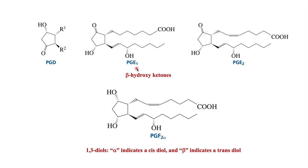PGD, PGE1, and PGE2 contain beta-hydroxy ketones. There is a ketone, and at the beta position they contain a hydroxyl group, making them beta-hydroxy ketones. The subscript 1 in PGE1 represents the presence of one double bond, while the subscript 2 in PGE2 represents two double bonds present in the structure.